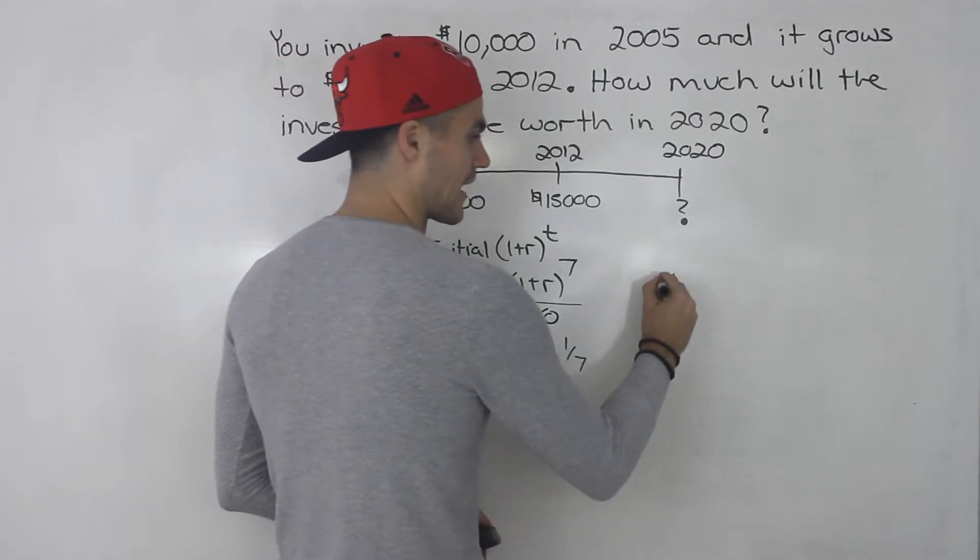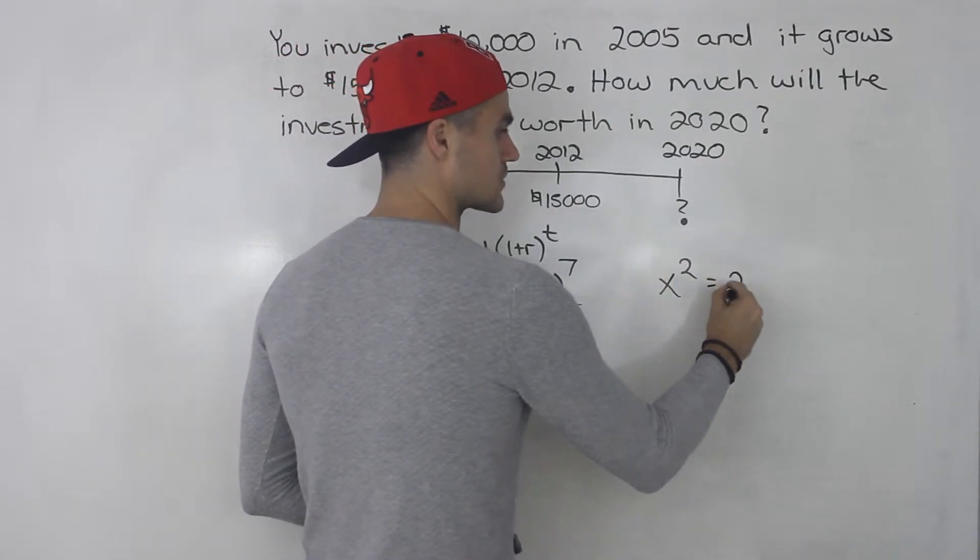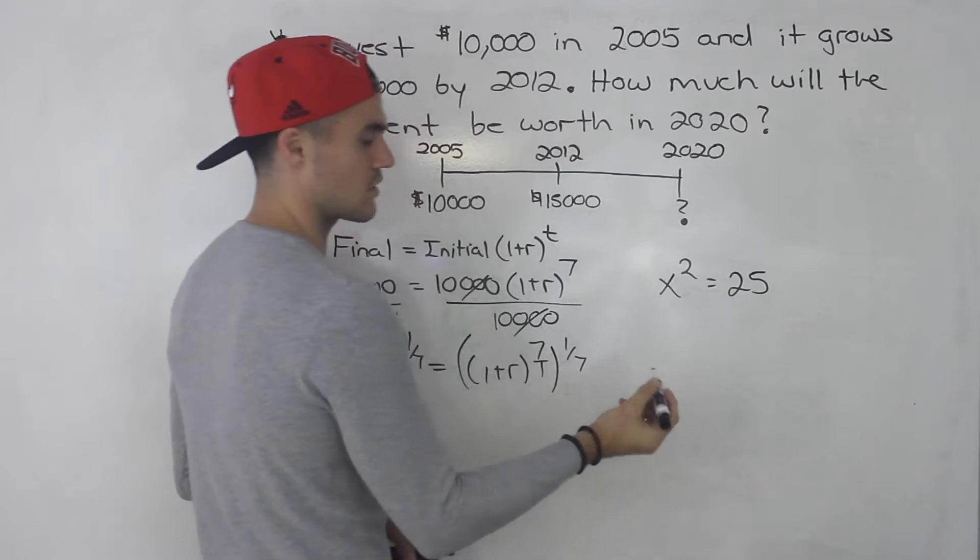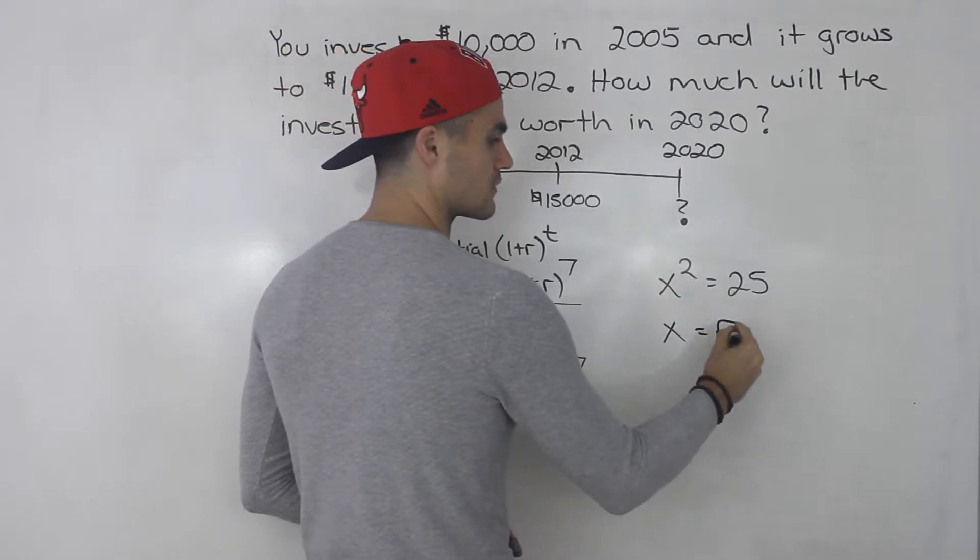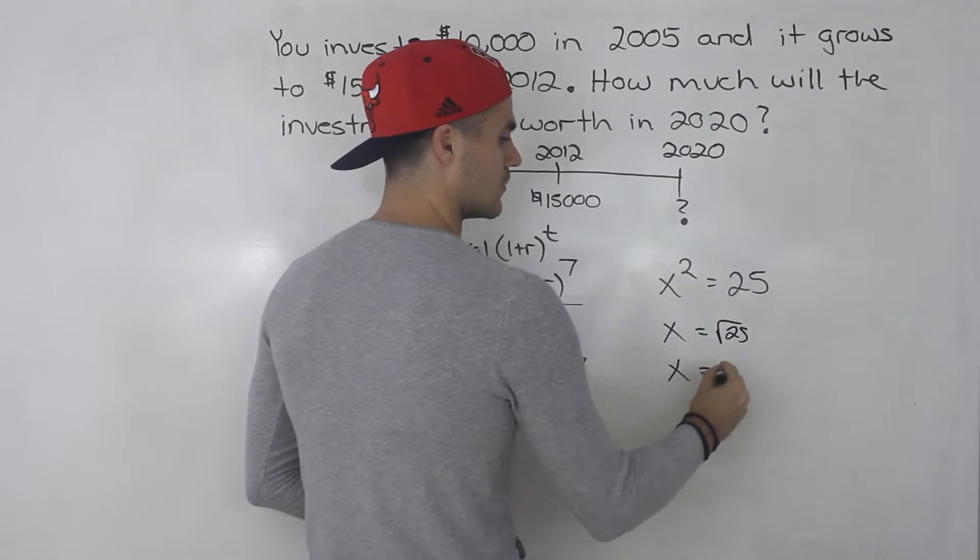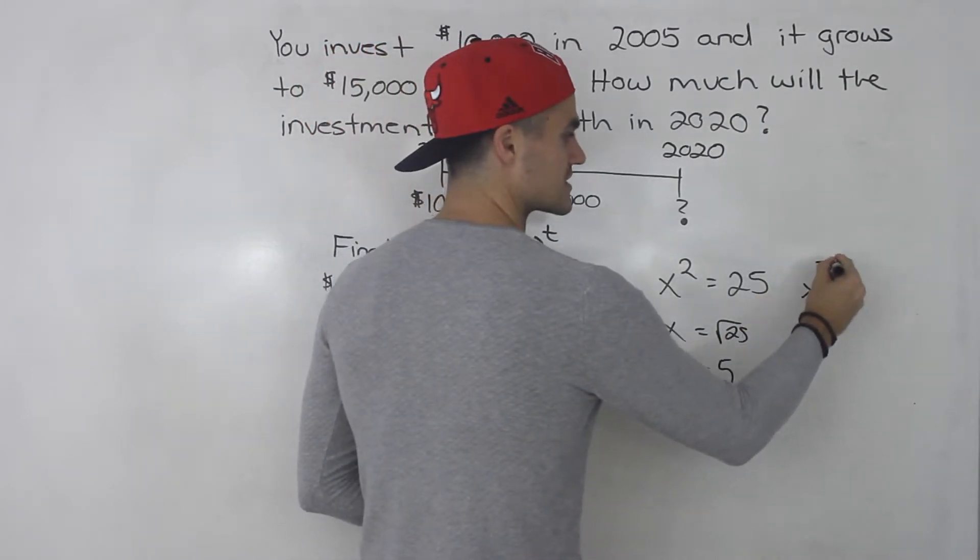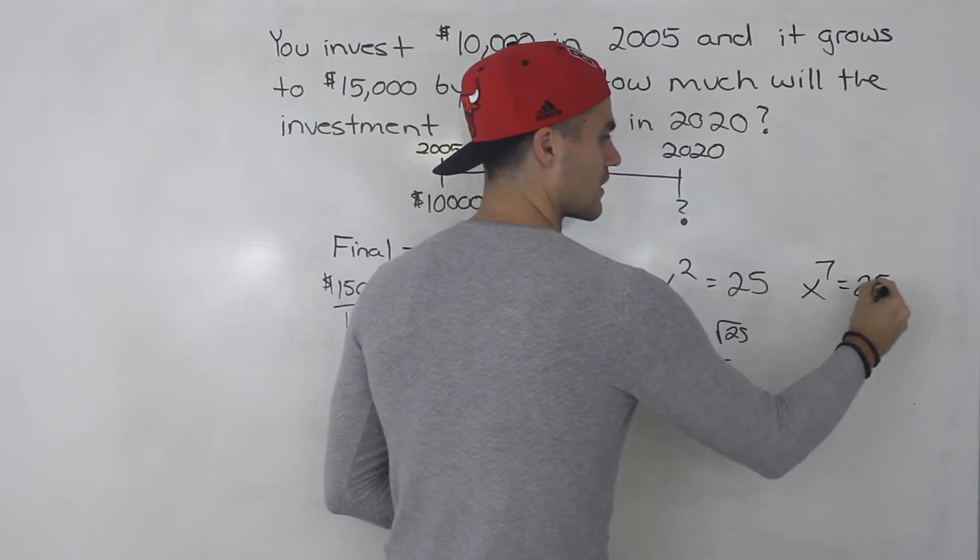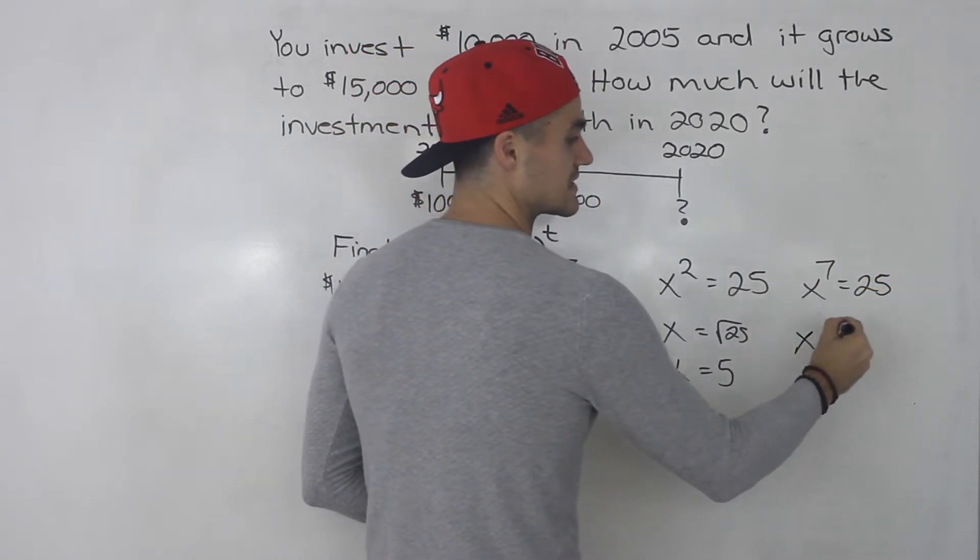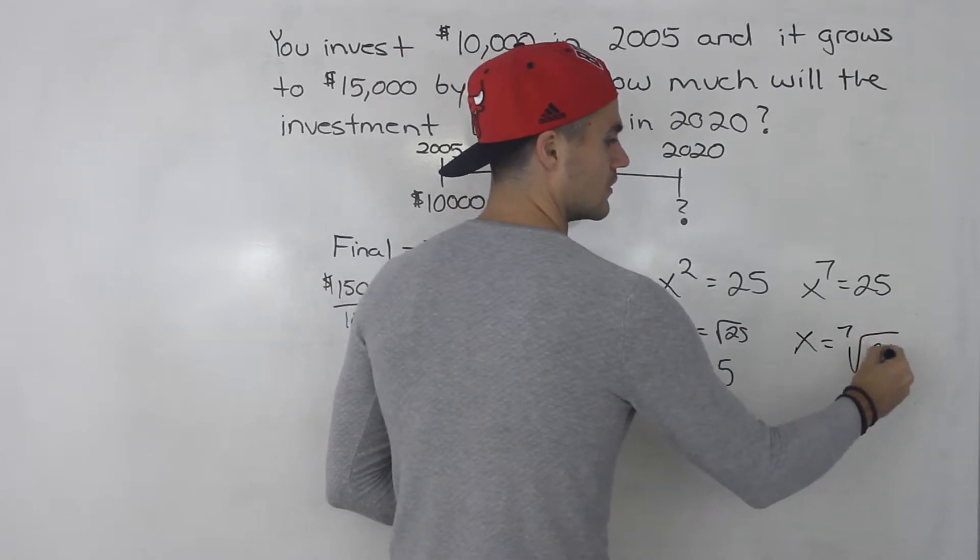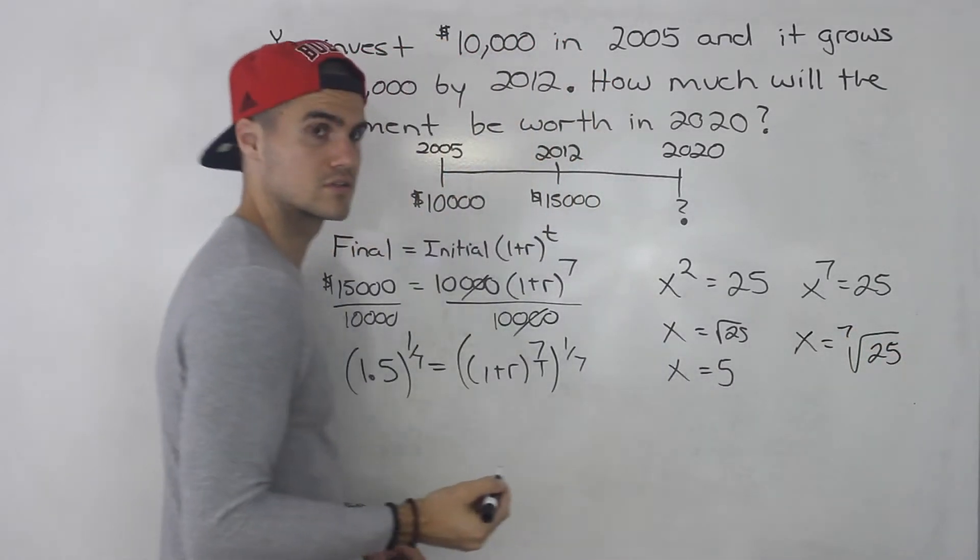For example, let's say we have x squared equals 25. How do we solve for x? Well we square root both sides. So x would be the square root of 25 which would be 5. Let's say we had x to the power of 7 equals 25. Well if we want to find what x is, then x would just be the seventh root of 25.